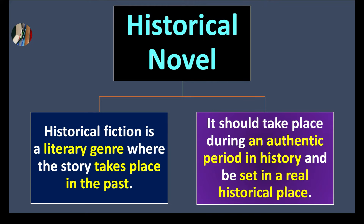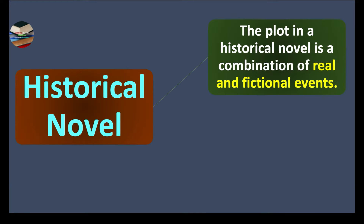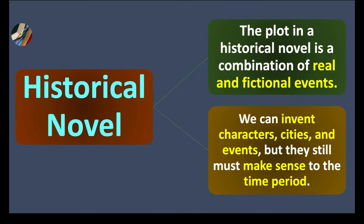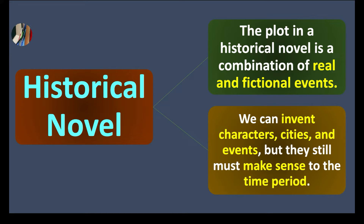The story must take place in an authentic period in history, meaning it must have a real-life historical connection, and the whole atmosphere should be set in a real historical place. The plot in a historical novel is a combination of real and fictional events, combining both to make it more interesting to the reader. You can invent characters, cities, and events, but they must make sense to the time period in which you are writing.